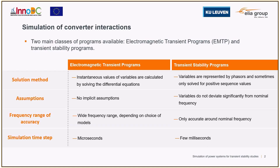Due to the high level of detail of EMTP models and the small time steps used, simulations tend to be slower, while in transient stability programs the lower level of modeling detail allows for faster simulations and larger time steps.